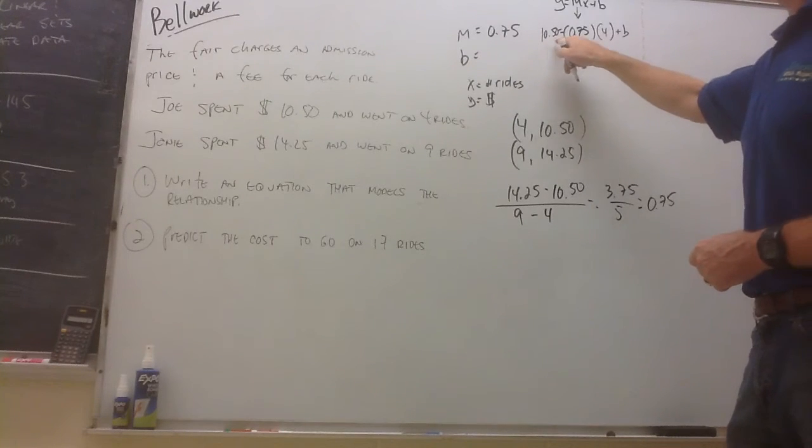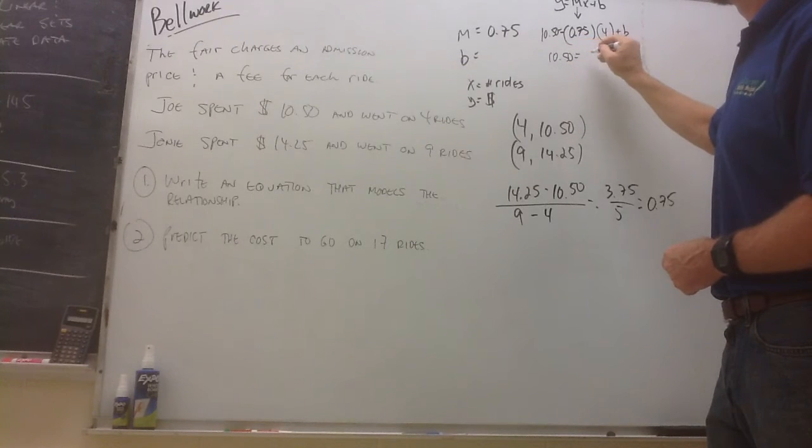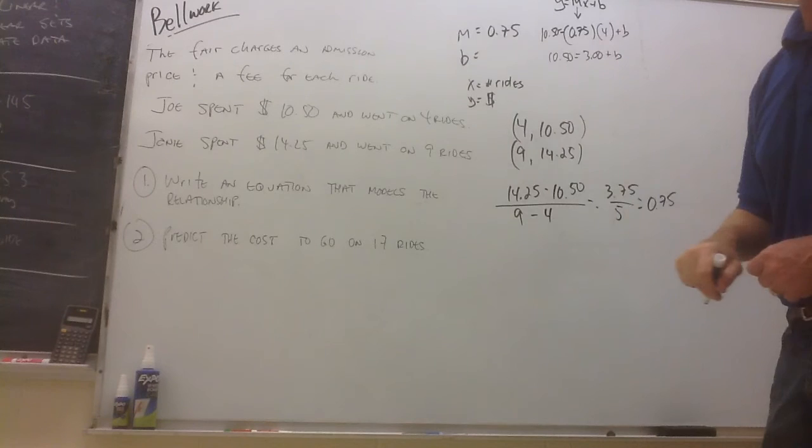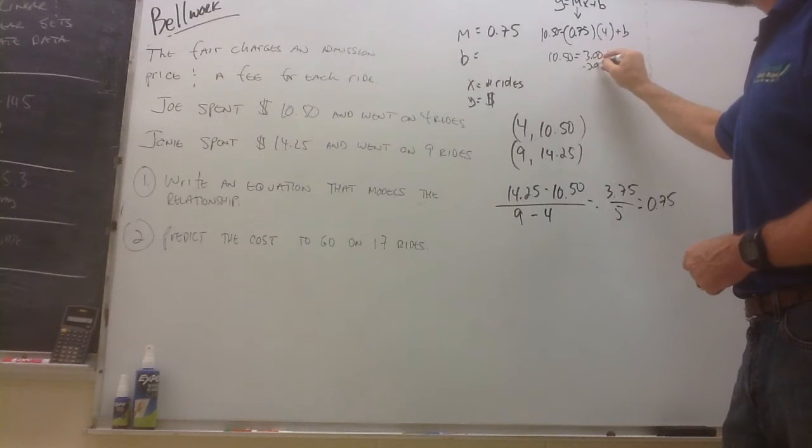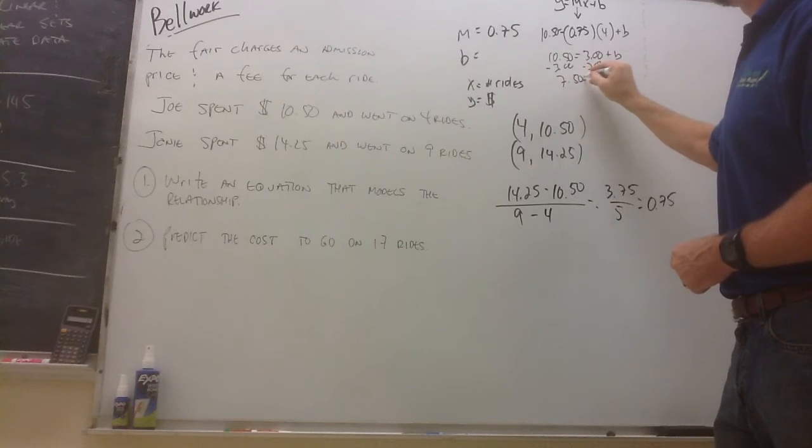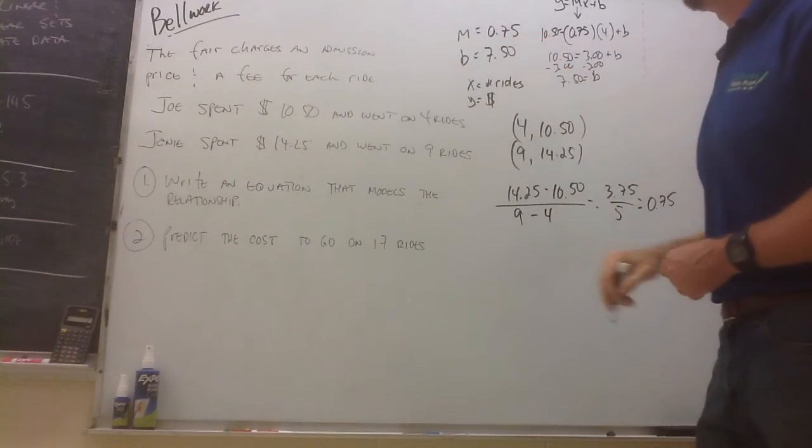Okay, so here we go. $10.50 equals $0.75 times 4. $0.75 times 4 is $3 plus b. I want to get the b by itself, we'll subtract $3 from both sides, and we get $7.50 equals b. So I know my y-intercept now is $7.50.